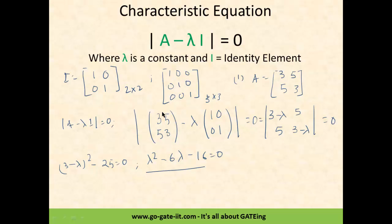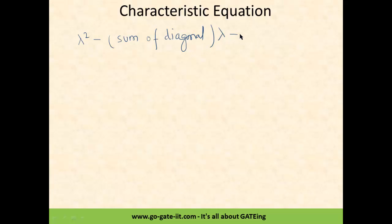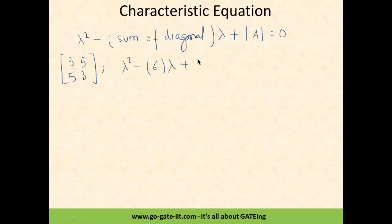There is a shortcut to calculate the characteristic equation. Whenever you are given a 2x2 matrix, you can directly write the characteristic equation using the formula: lambda squared minus (sum of diagonal elements) times lambda plus determinant of A equals 0. Applying this to the matrix [3,5; 5,3]: the sum of diagonal elements is 3+3=6, and the determinant is 9-25=-16, giving lambda squared minus 6 lambda minus 16 equals 0. This is equivalent to the equation we derived earlier.